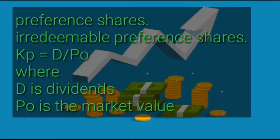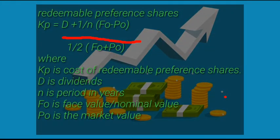Under equity we also have preference shares. Starting with irredeemable preference shares, the formula is: d divided by p-naught, where d is dividends and p-naught is the market value. For redeemable preference shares, the formula is: kp equals [d plus (1/n)(f-naught minus p-naught)] divided by [0.5 times (f-naught plus p-naught)], where kp is the cost of redeemable preference shares, d is dividends, n is the period in years, f-naught is the face value, and p-naught is the market value.